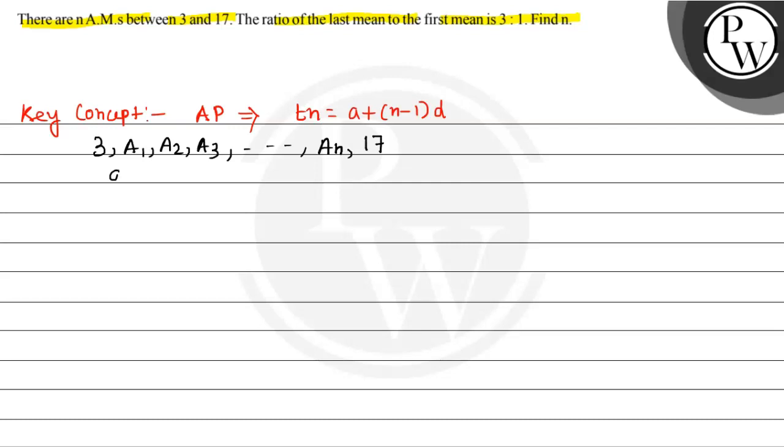AN or TN, you can write as 17. And A, the first term is equal to 3. The number of terms is equal to N plus 2.